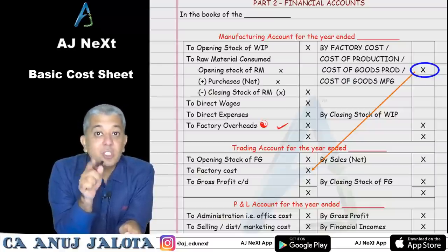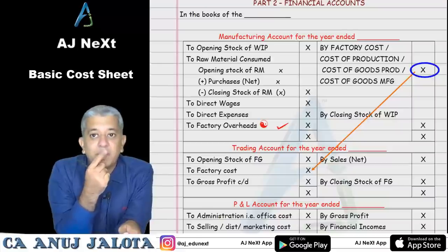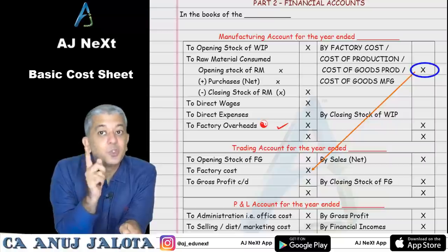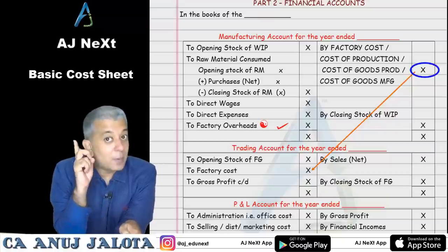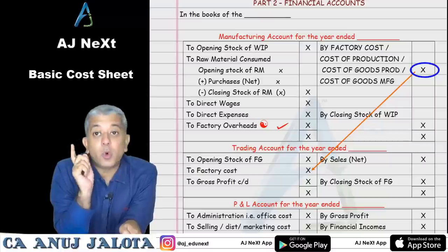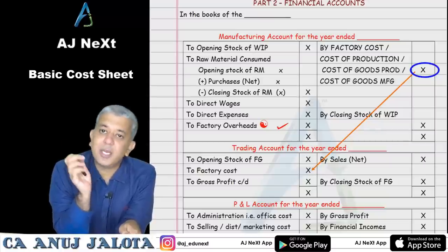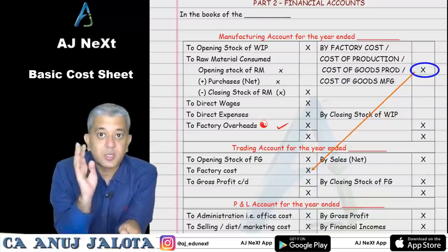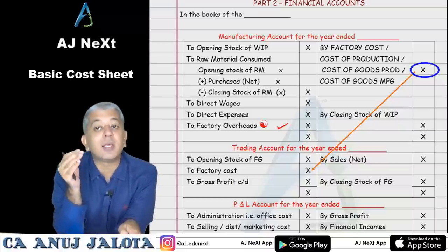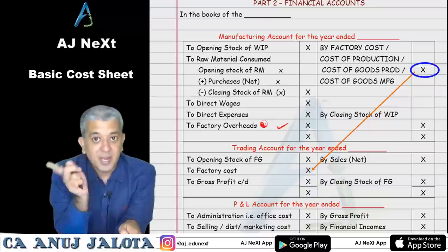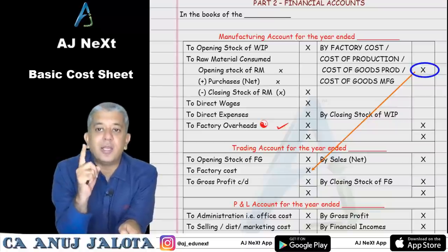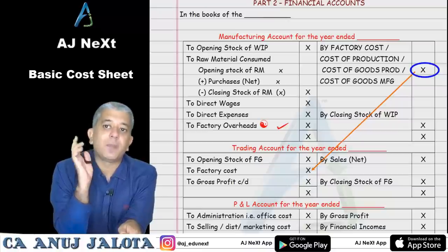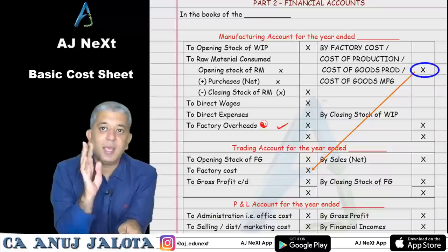WIP stock under both cost accounts and financial accounts is always valued at cost only — you can't determine a market price for a half-finished product. Only for finished goods in financial accounts is there an option: it can be valued at cost or market price whichever is lower. But remember, this rule is from financial accounting standards, which do not apply to costing. In cost sheet, finished goods stock is always valued at cost.